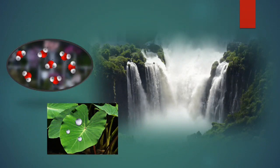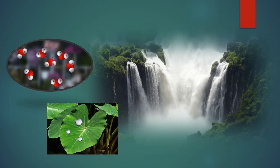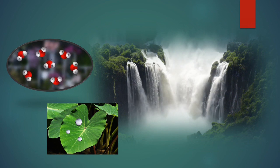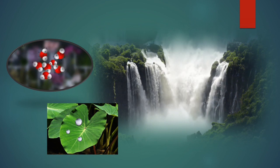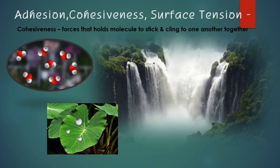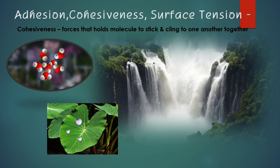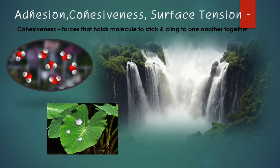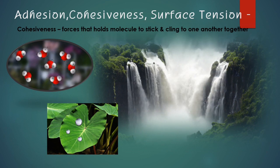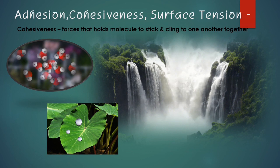The interconnectedness among water molecules by reason of extensive hydrogen bonding and intermolecular forces will also result in a related emergent property called cohesiveness. It refers to a process that holds molecules to stick and cling to one another, thereby forming a rounded or spherical-shaped water droplet.